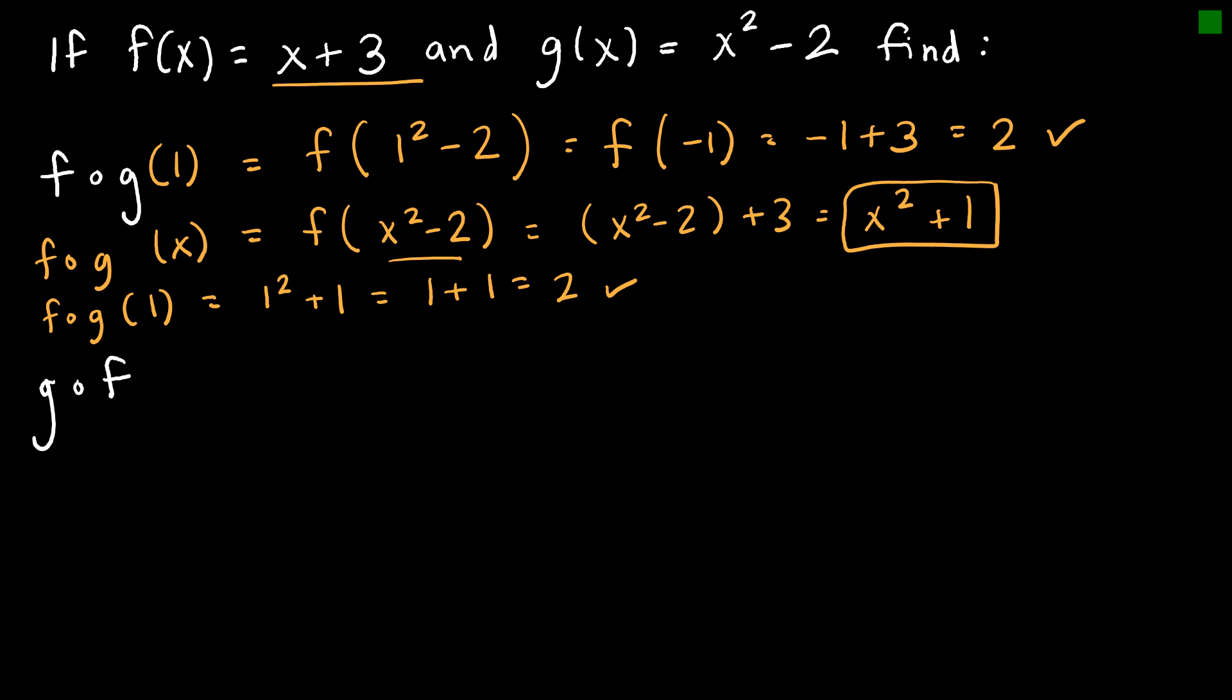So let's do the exact same thing this time for g of f of x and we're going to start actually with g of f of 1 like we did on the last example and so I'm saying let's take g of f of 1. f of 1 is 1 plus 3 and that means I'm taking g of 4 and g of 4 would be 4 squared minus 2. 4 squared minus 2 is 16 minus 2 or 14.